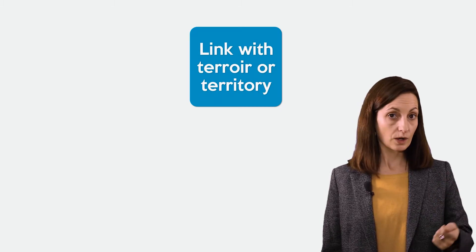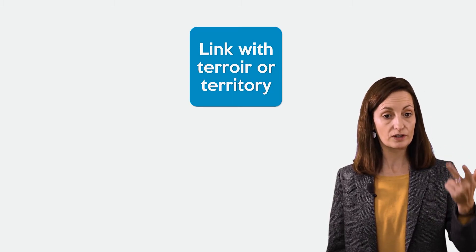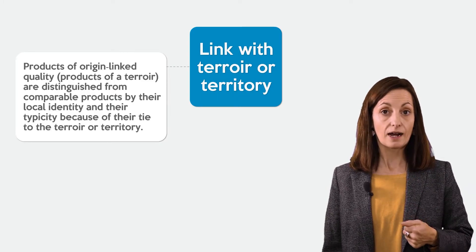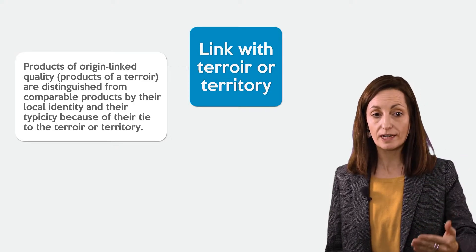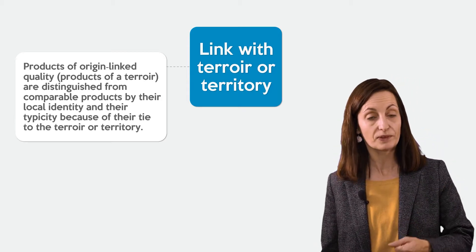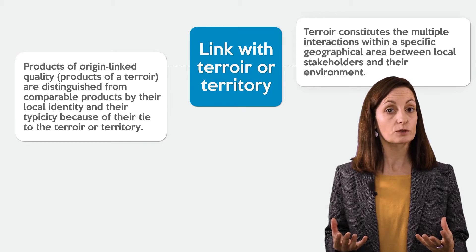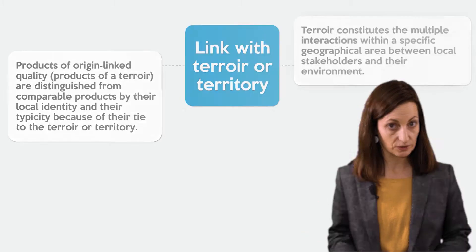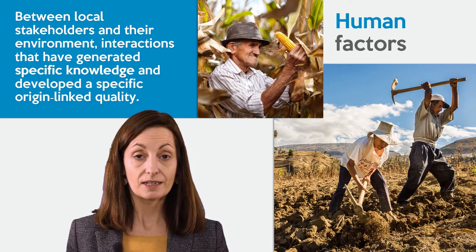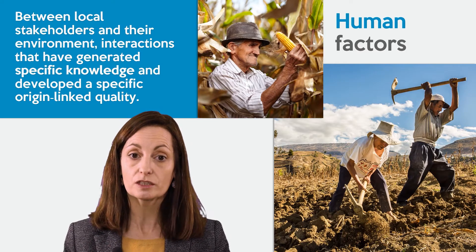Concerning the link with the terroir or territory: the terroir is composed of several elements — the climate, the soil, surrounding plants, and the topography. Products with origin-linked quality are distinguished from comparable products because of their local identity and typicity, due to their tie to the terroir or territory. The terroir constitutes the multiple interactions within a specific geographical area between local stakeholders and their environment, which will explain the human and natural factors.